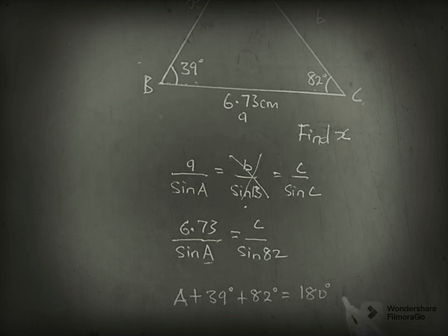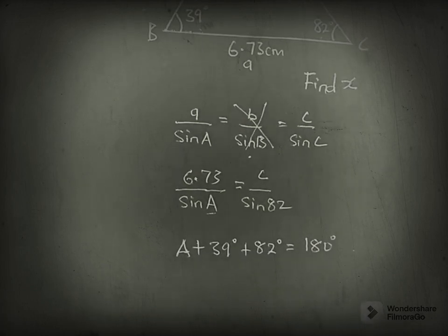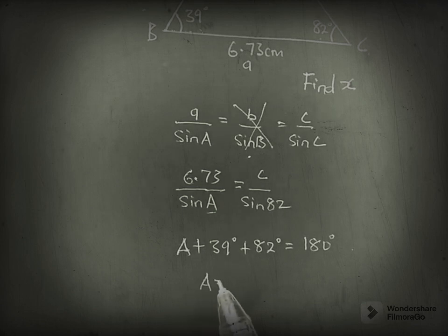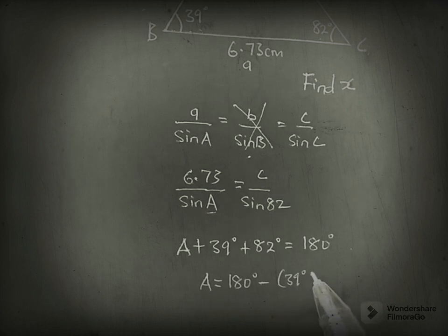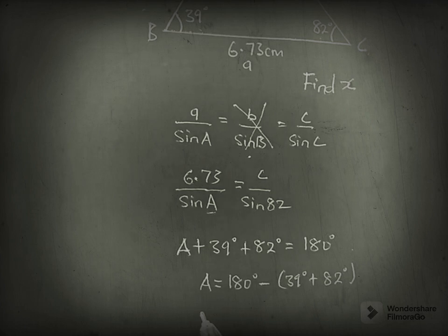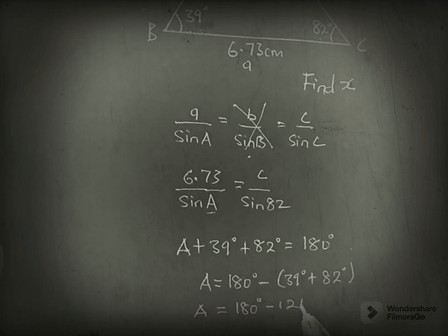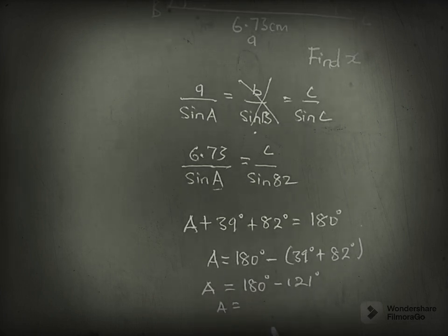That is the sum of angles in a triangle. So we can say that A equals 180 minus 39 plus 82 degrees. This will be A equals 180 minus 121. A equals 59 degrees.